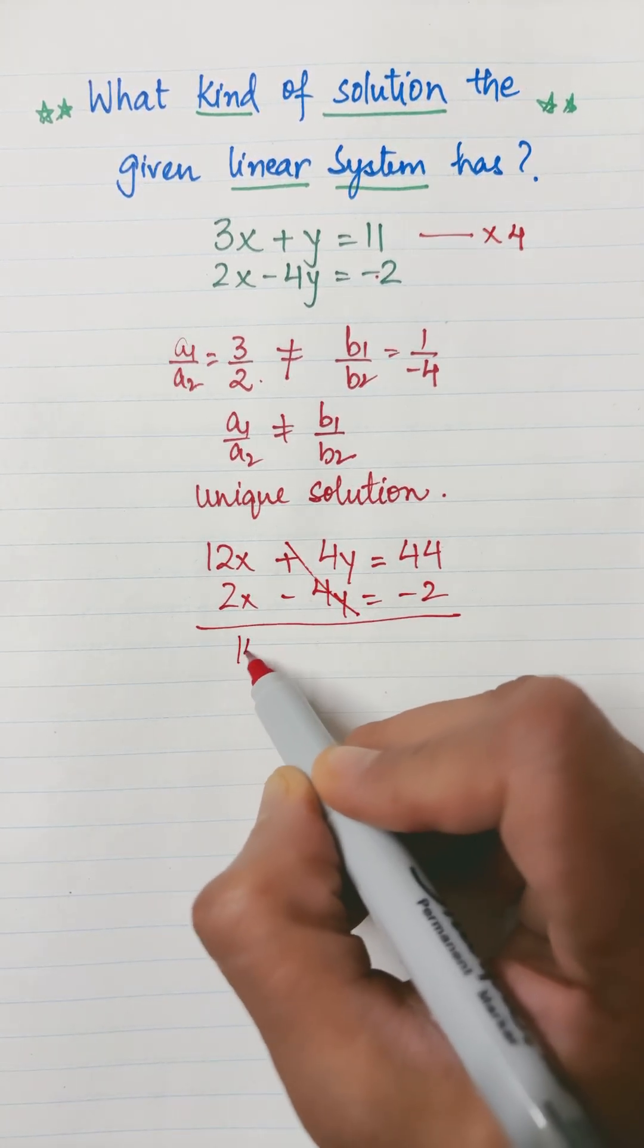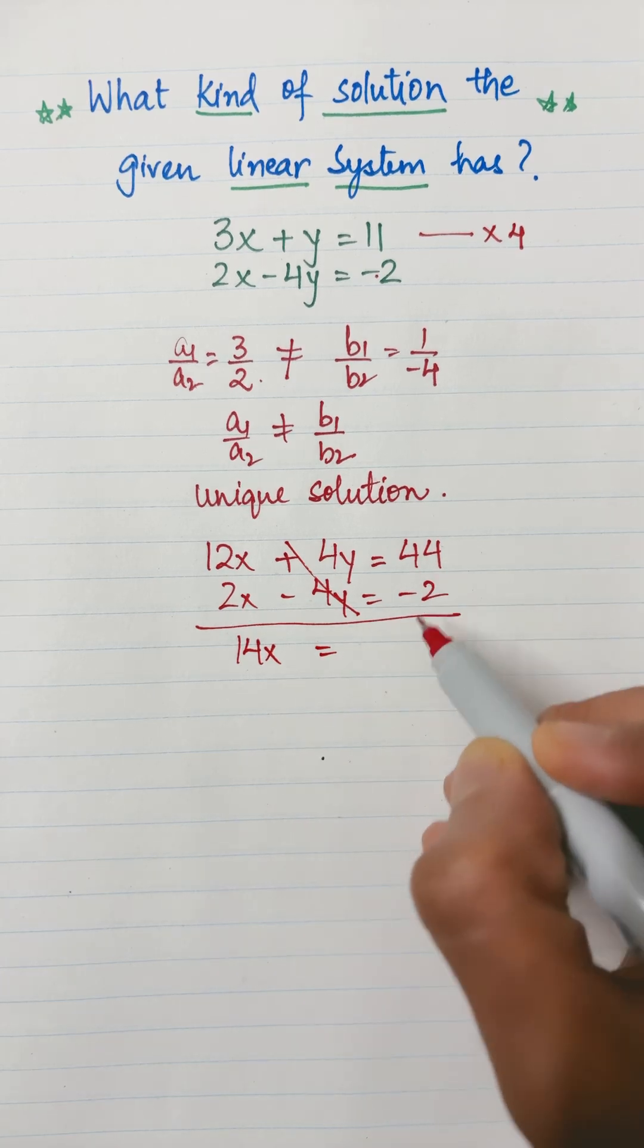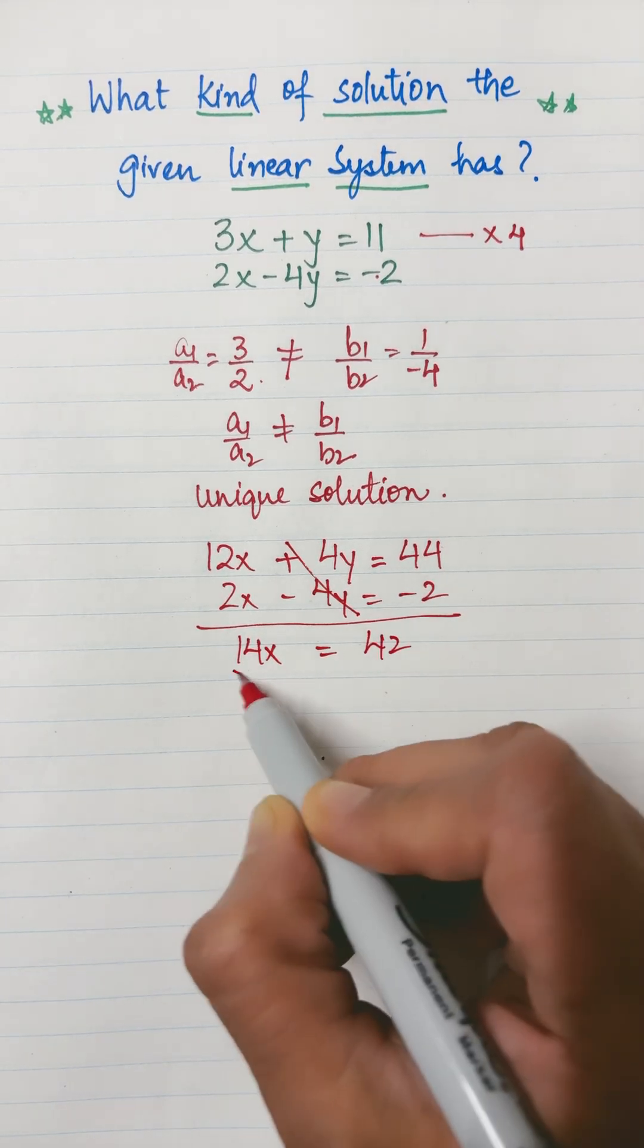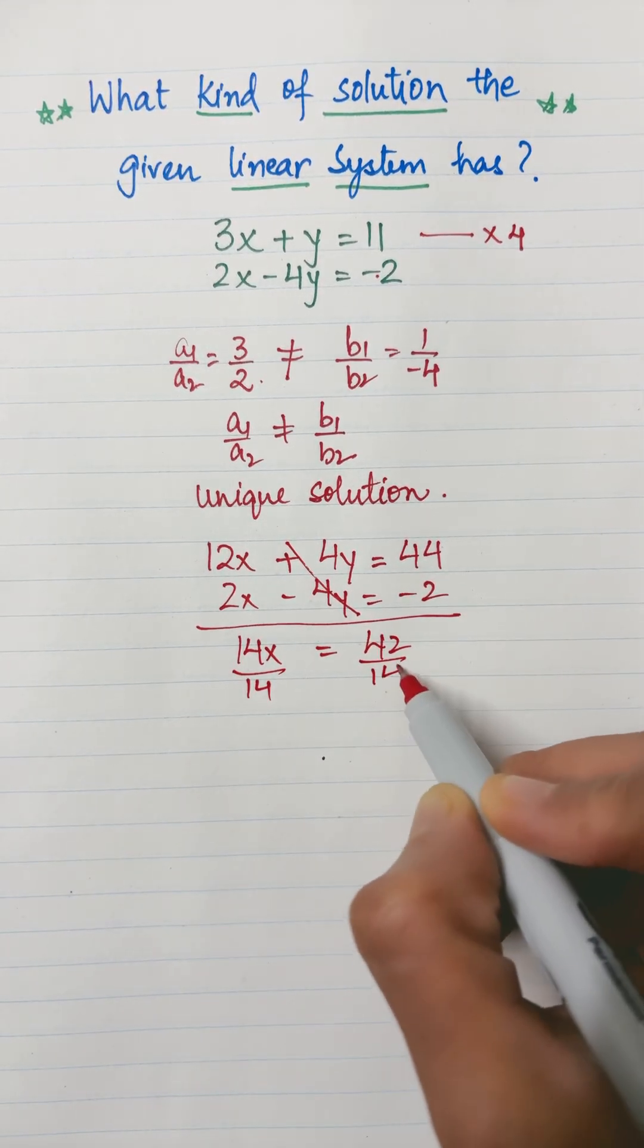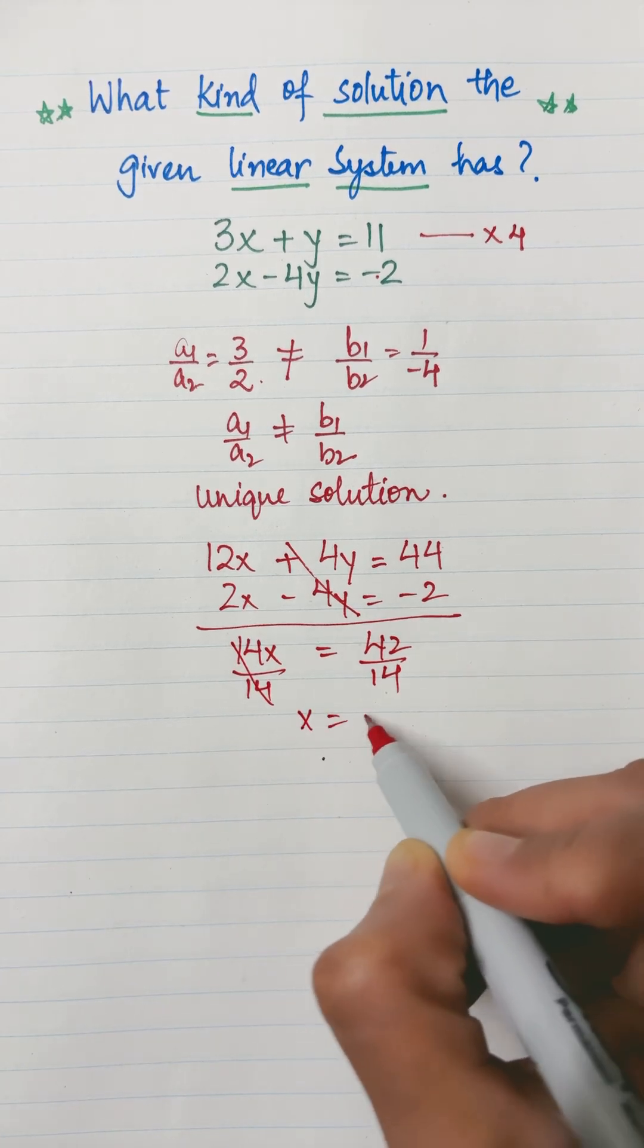12x plus 2x is 14x, equals 44 minus 2 is 42. Divide by 14 on both sides, and x comes out to be equal to 3.